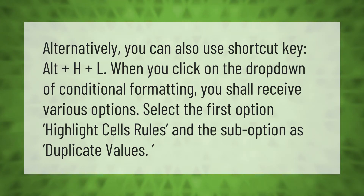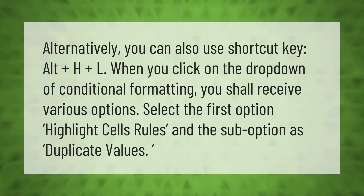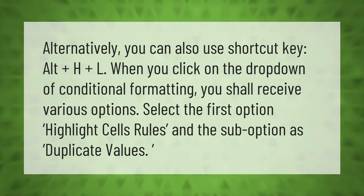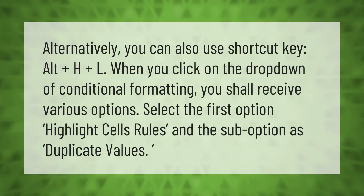You can also use the shortcut key Alt + H + L. When you click on the drop-down of Conditional Formatting, you will receive various options. Select the first option, Highlight Cells Rules, and the sub-option Duplicate Values.